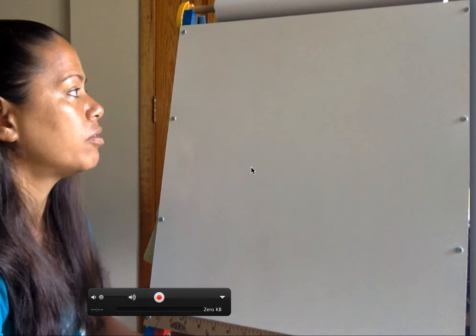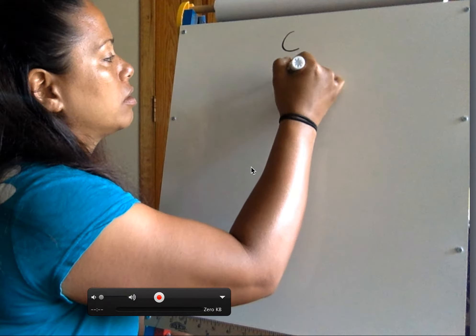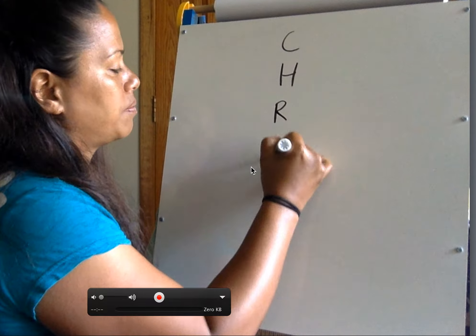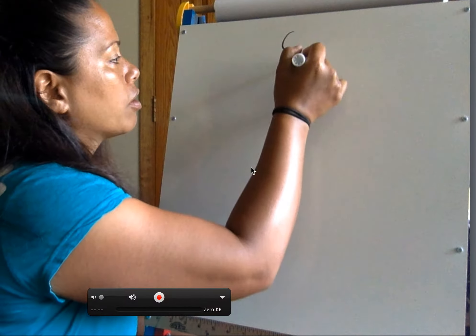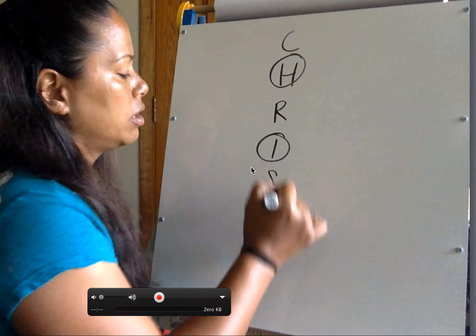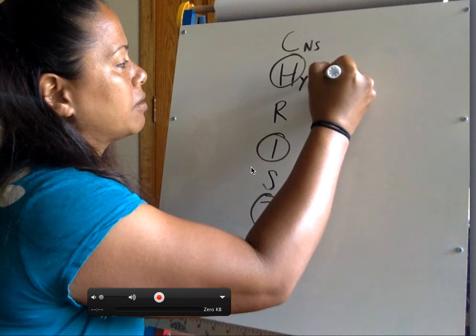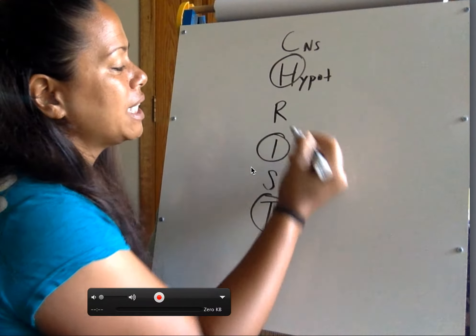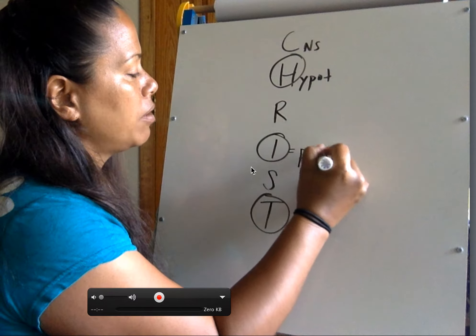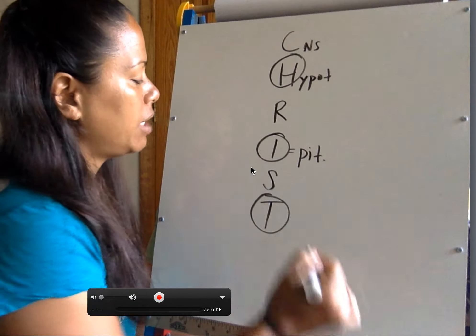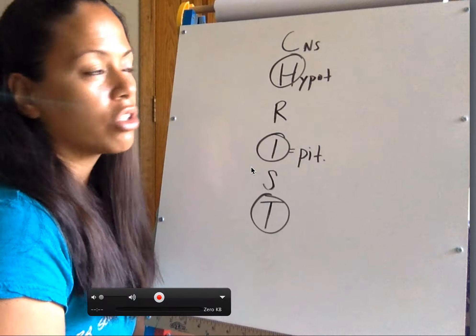So let's do a little bit of review. I like to use the mnemonic Christ. We'll be covering a lot of mnemonics for this chapter. Here, Christ stands for CNS, hypothalamus, releasing hormones, important gland which is the pituitary, also known as the master gland, stimulating hormones, and target organ or target gland.